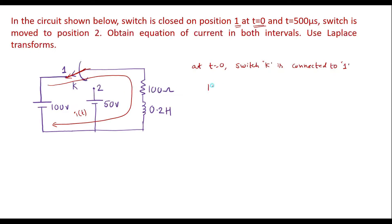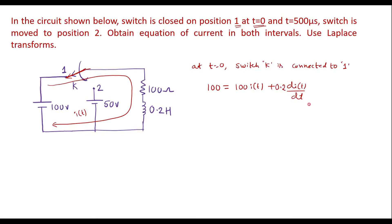I can write: 100 is equal to voltage across 100 ohm, which is 100 I of t, plus voltage across the inductor, which is L di(t)/dt. Here the value of L is 0.2. I will replace L by 0.2.